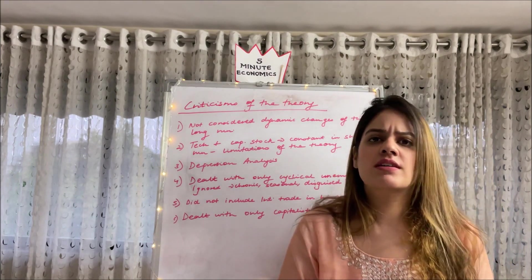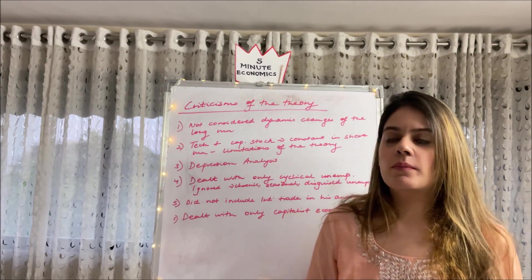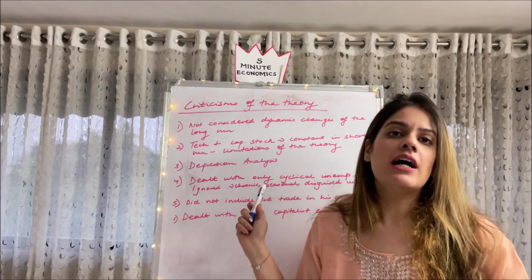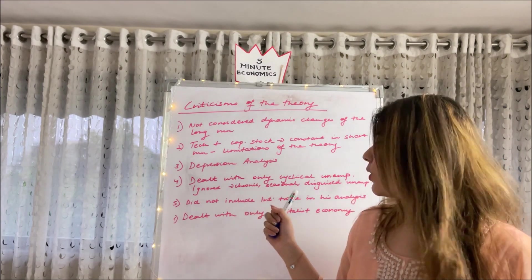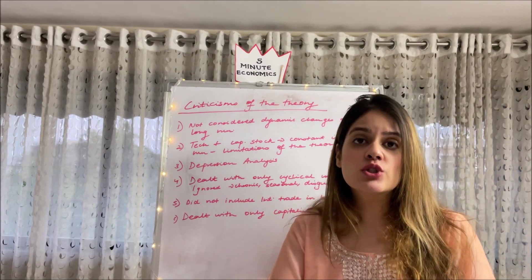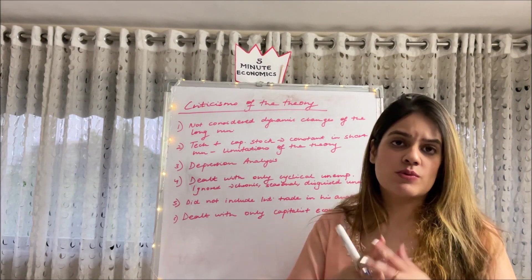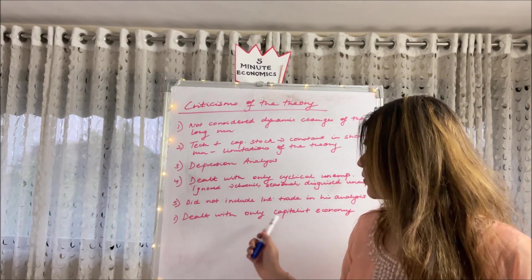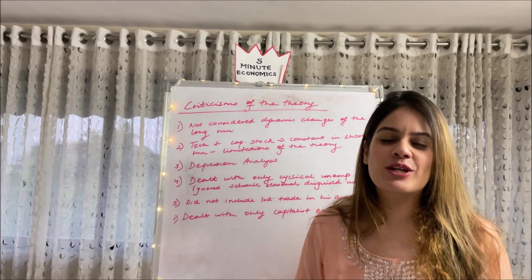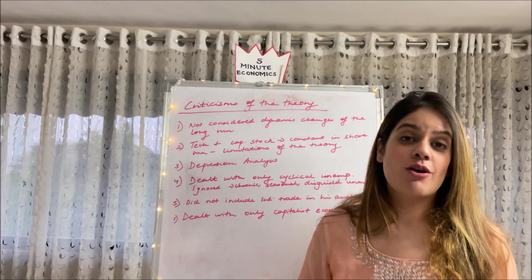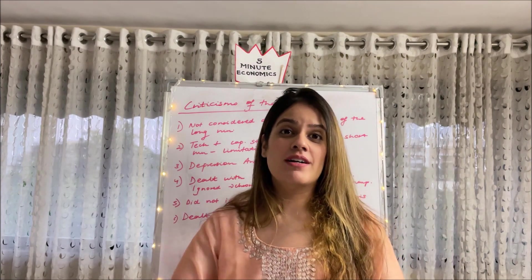Thirdly, his analysis focuses more on depression analysis, that is how to get an economy out of depression using fiscal measures, but how does an economy deal with inflation? That hasn't been spoken about anywhere. Next, it dealt with only cyclical unemployment which actually happens during a depressionary or recessionary phase, ignored the other chronic types of unemployment, the seasonal or the disguised unemployment which usually happens in a developing economy. Next, he did not include international trade in his analysis. And lastly, he dealt only with a capitalist economy and ignored the socialist economy. So however good a theory, you will have some people to criticize your theory. So these are few criticisms of this particular theory.